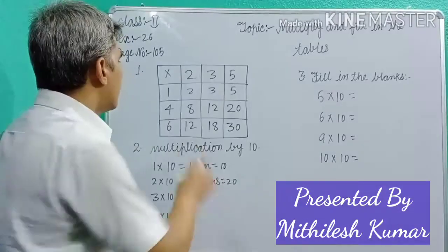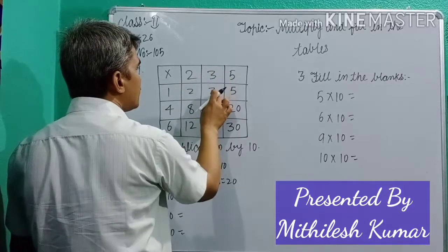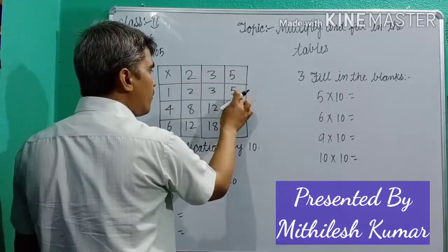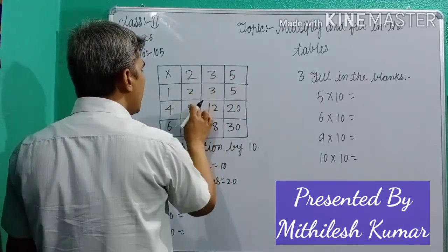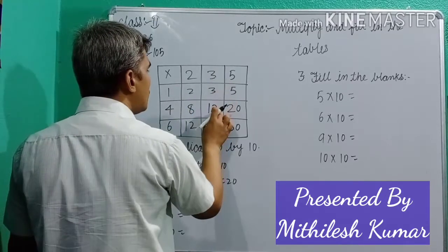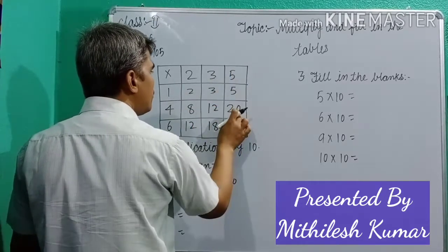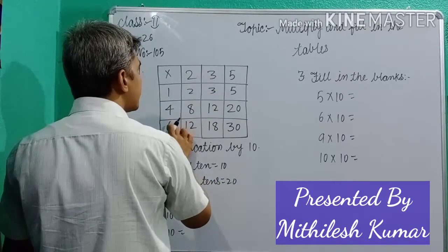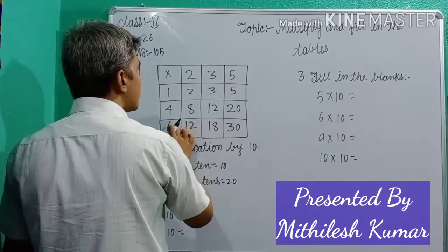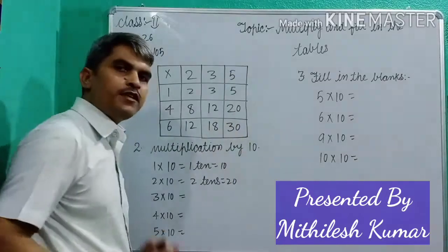1, 2, 2, 1, 3, 3, 1, 5, 5, 4, 2, 8, 4, 3, 2, 4, 5, 20, 6, 2, 2, 6, 3, 18, 6, 5, 30. That's ok.